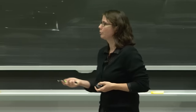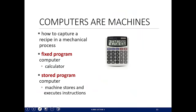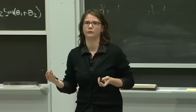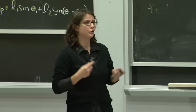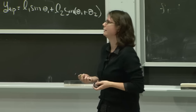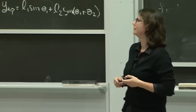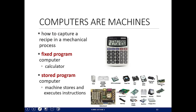That's when stored program computers came into play. These were machines that could store a sequence of instructions and execute them — and you could change the sequence of instructions to execute different tasks on the same machine. That's the computer as we know it today. The central processing unit is where all of these decisions get made.